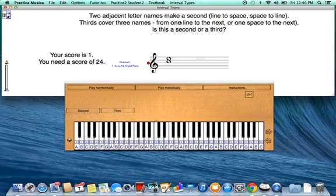And so at the top of this activity module, you will notice directions. In this case, it says two adjacent letter names make a second, line to space or space to line. Thirds cover three names, from one line to the next or one space to the next.